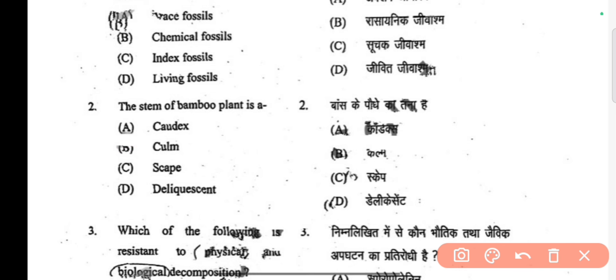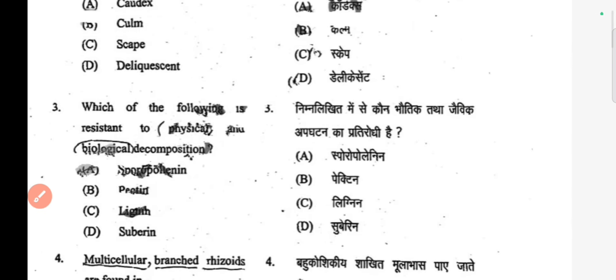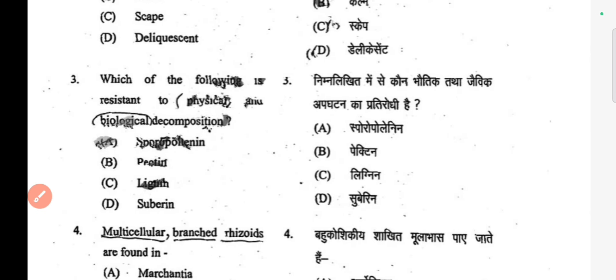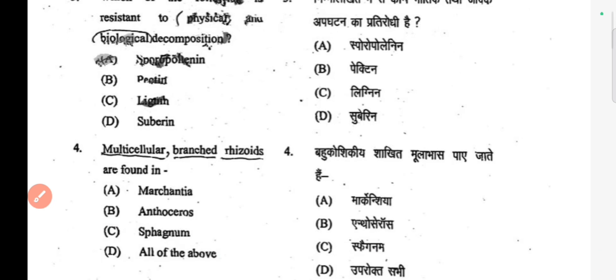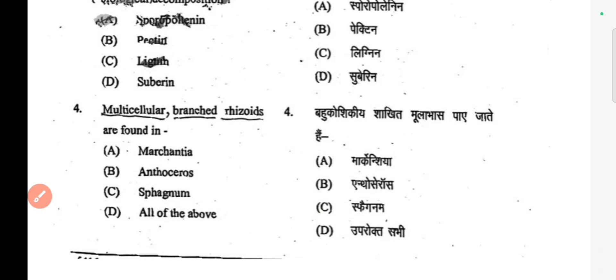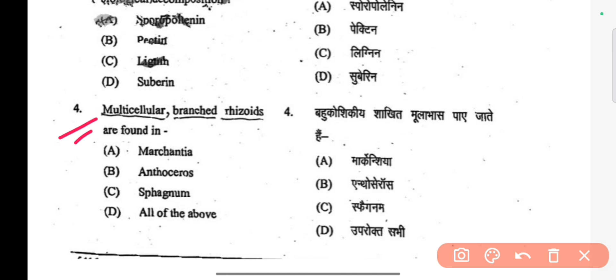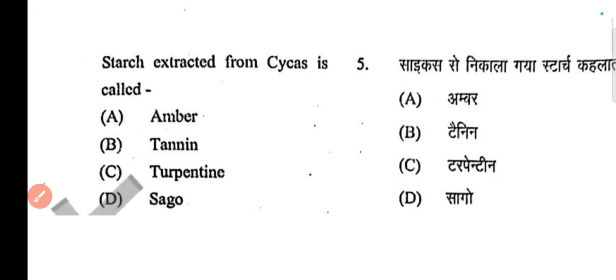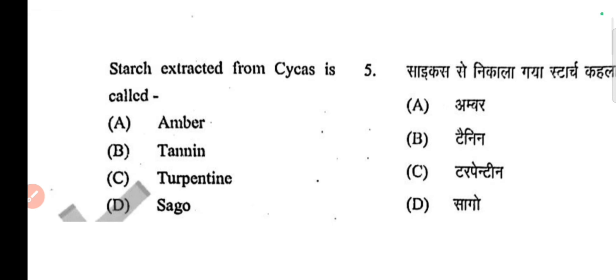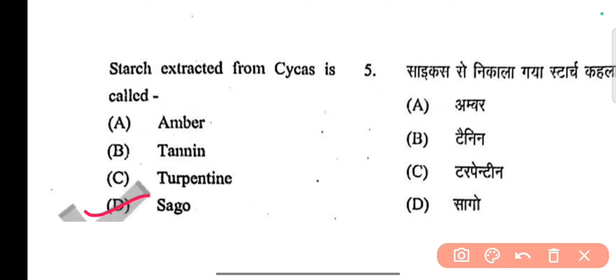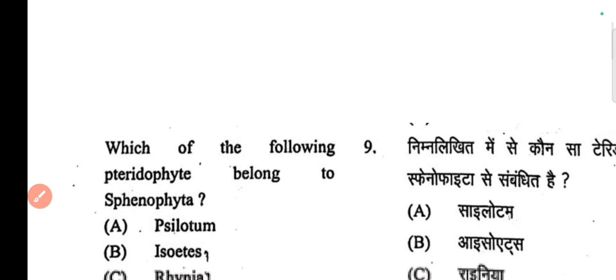Next question: which of the following is resistant to physical and biological decomposition? The correct answer is A. Next question: multicellular branched rhizoids are found in — this is not confirmed, you can check it out. Next question: starch extracted from Cycas is called — the correct answer is D, Cycas starch.